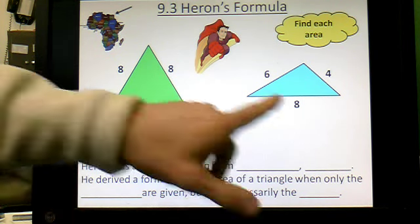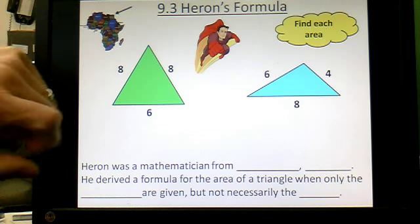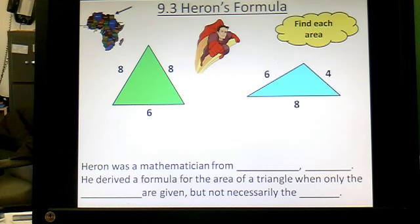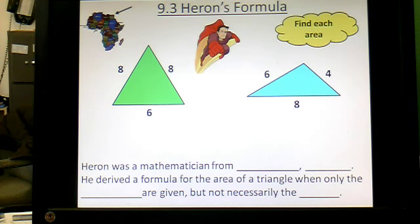Find the area of each one of these triangles. So you have to label your paper. This one has sides 8, 6, and 8. The other one has sides 6, 8, and 4. So find the area of each one of these triangles. I'll be back in, say, 30 seconds or so. Should be able to get some numbers to work with here. I'll give you a second to write them down and think.